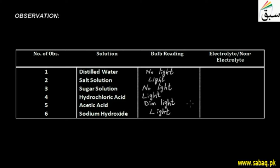Here we have written all observations. We have recorded the number of observations, the solutions tested, and in the bulb reading column we have written whether it gave light or not. Now we will draw inferences from this.